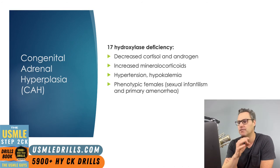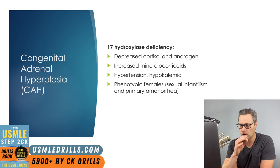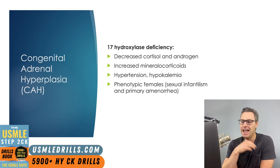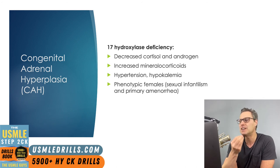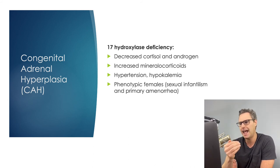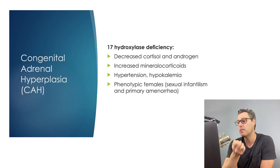The last enzyme deficiency is 17-hydroxylase deficiency. This results in decreased cortisol and androgens, but an increase in mineralocorticoid levels. Patients are hypertensive and hypokalemic, and all patients — regardless of biological sex — present as phenotypic females. Genetically male patients will have a blind vagina and undescended testes. This is usually discovered when the patient presents with primary amenorrhea.